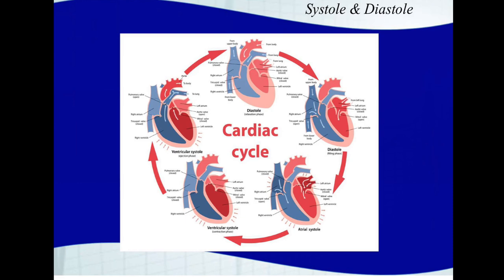Part of what makes that blood flow process work is contraction. The cardiac cycle involves contraction and relaxation — in expert terms, systole and diastole. Systole, or systolic, is when the heart is contracting, which gives you higher blood pressure because the heart is forcing blood out. Diastole is when the heart is relaxing and starting to fill back up, giving you the lower blood pressure numbers.